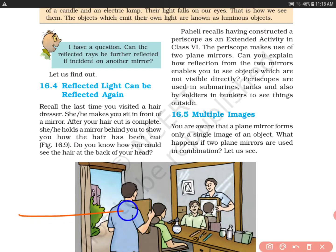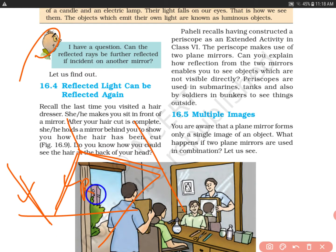This means that when you put incident light on a mirror, you get reflected light. This reflected light can be reflected again - it can become the incident light for another object and be reflected once more. Can the reflected rays be further reflected if incident on another mirror? For the second mirror, the reflected light from the first mirror becomes an incident ray, and it will be reflected again. Yes, the answer is yes.